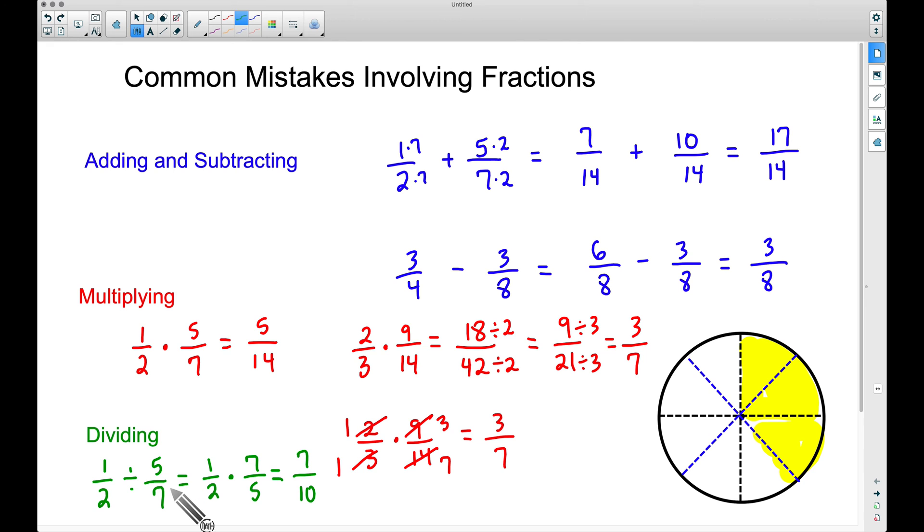And now some of you may be thinking, technically, could we just cross multiply? And technically, you could here, but be careful. When you cross multiply this way, 1 times 7, that has to be your numerator. And then when you cross multiply this way, 2 times 5 is 10, that has to be your denominator. So if you're going to take the cross multiplying approach here, please be careful and make sure you put those numbers in the right spots.